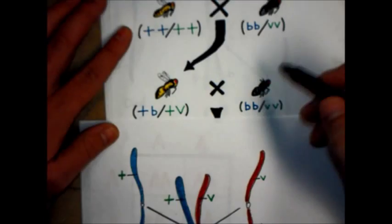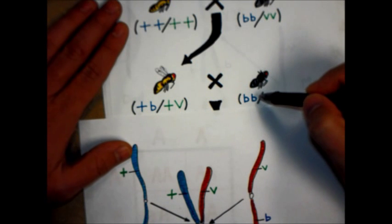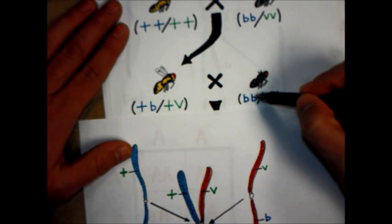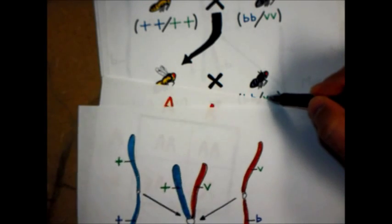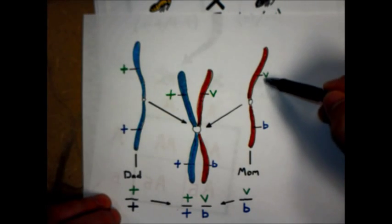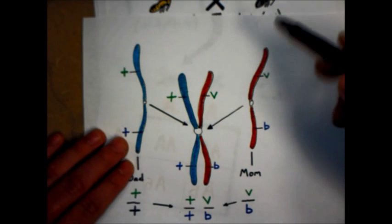But now, remember this? This mother can only donate a chromosome with a little b mutation and a little v mutation, like we see here. Little b, little v.